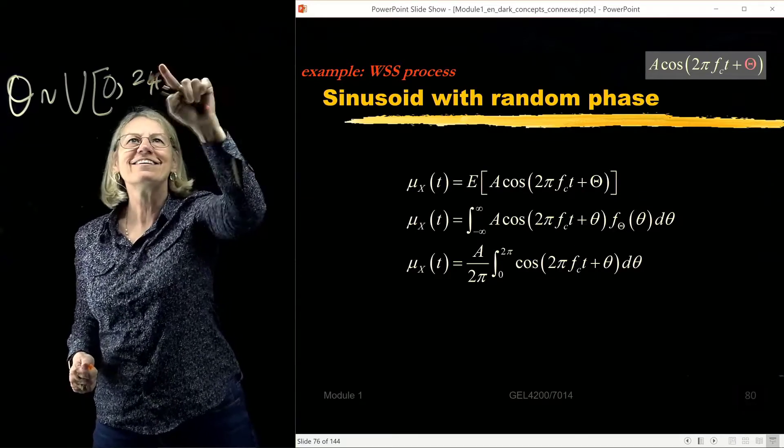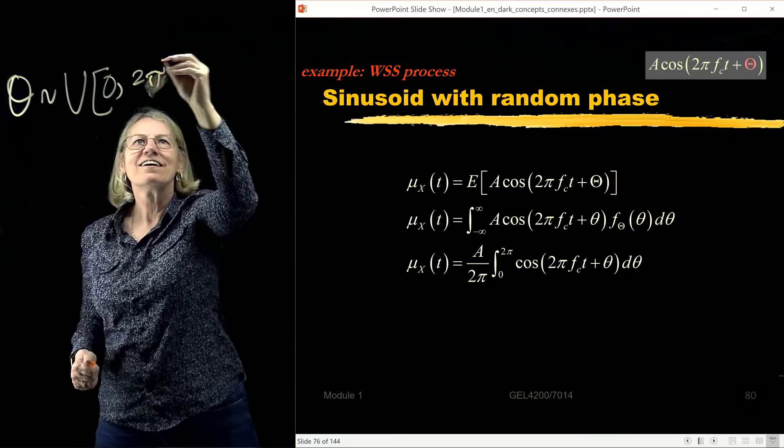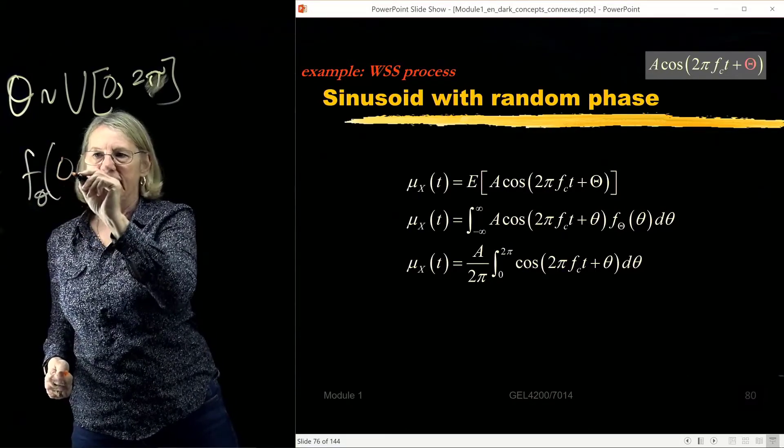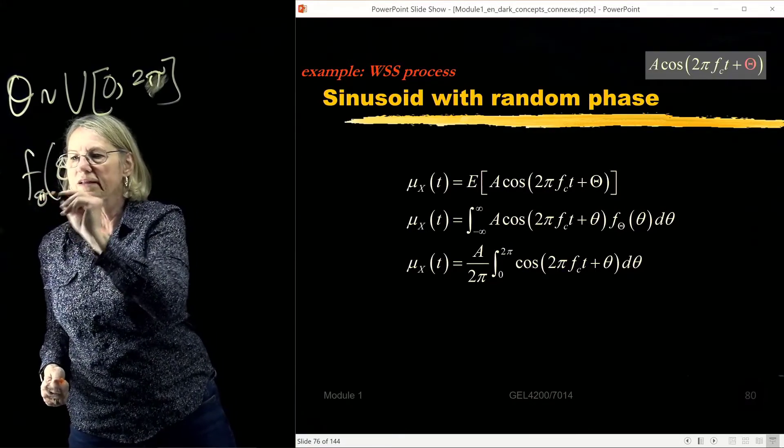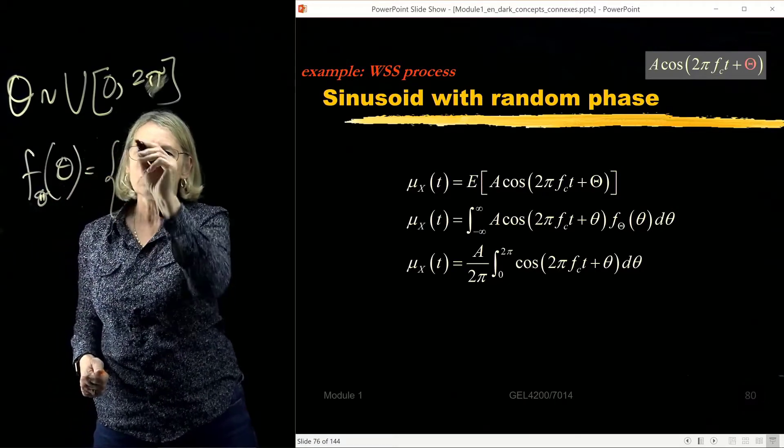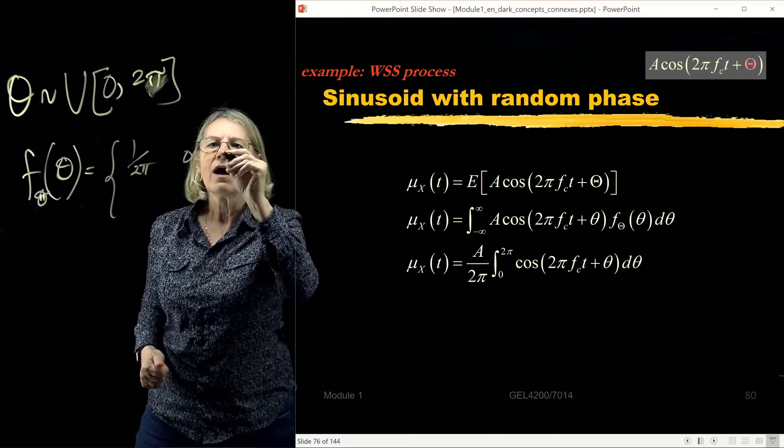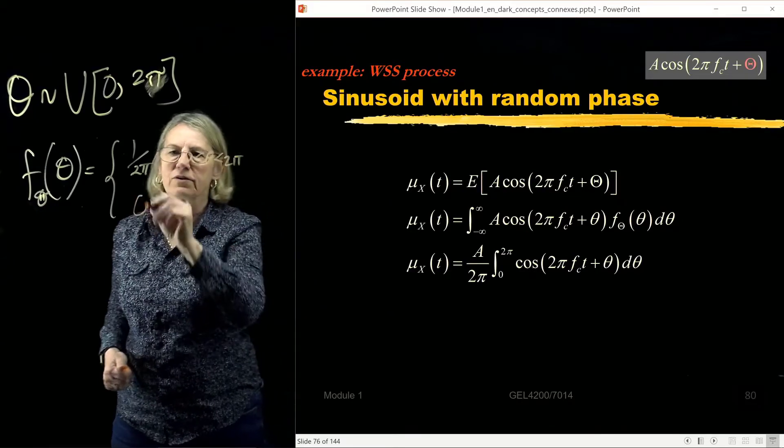Or another way to say that is f_theta of theta is equal to 1 over 2π between 0 and 2π and it's 0 everywhere else.